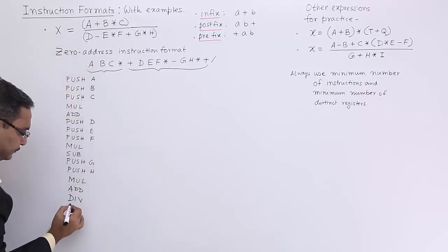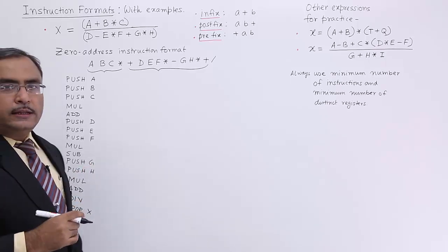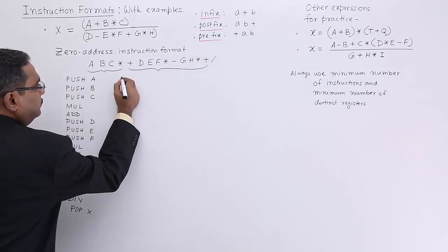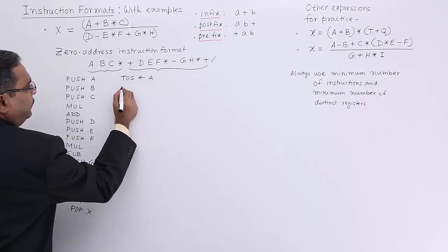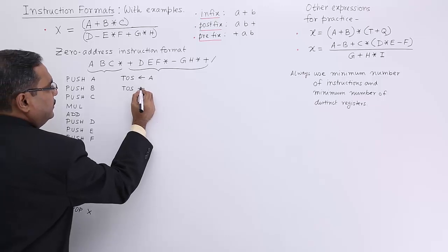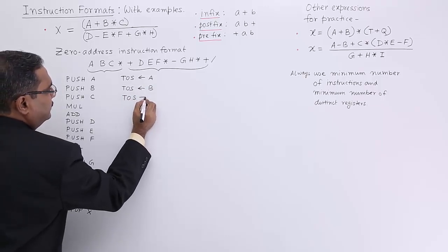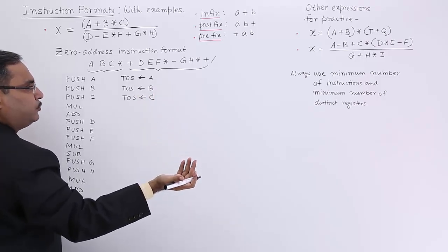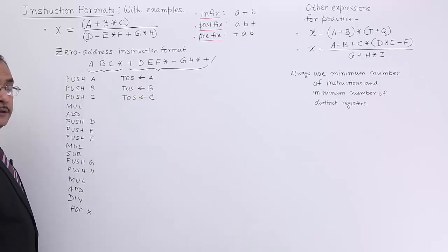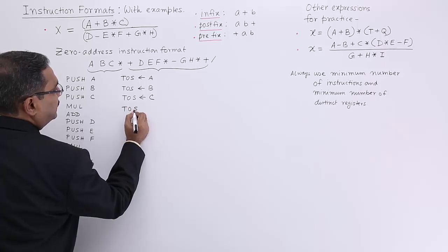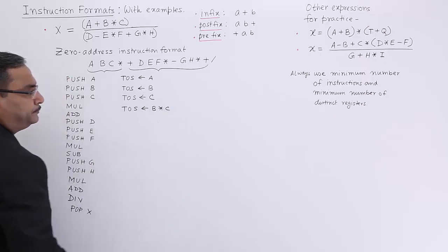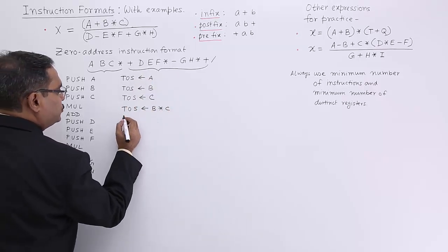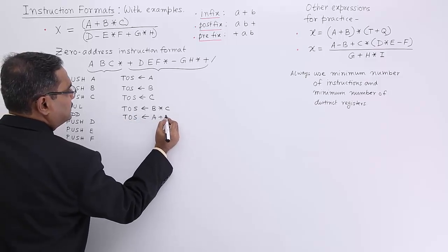Let me write the comments. After PUSH A, top of the stack holds A. After PUSH B, top of the stack holds B. After PUSH C, top of the stack holds C. MUL means B and C will be popped, B * C will be calculated and pushed back on top of the stack, so top of stack holds B * C. ADD means B * C will be popped, A will be popped, they get added and pushed, so top of the stack holds A + B * C.